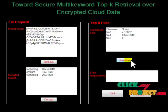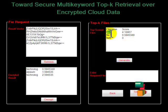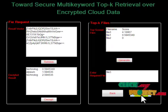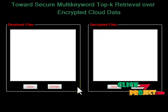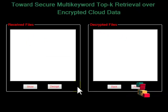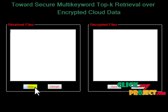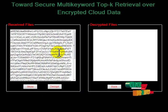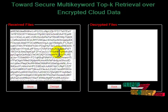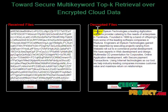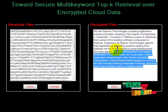The top-ranked files are shown here. The highest score is in file 3, so the user chooses file 3. The file name is sent to the cloud server, and the cloud server outsources the corresponding data file. The received file is decrypted with the user keys, and the decrypted original content is shown.